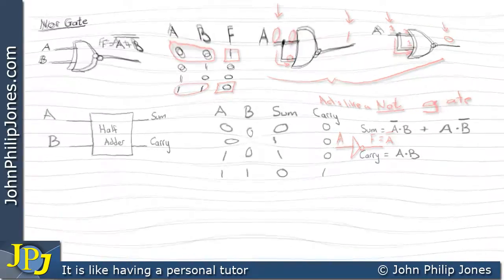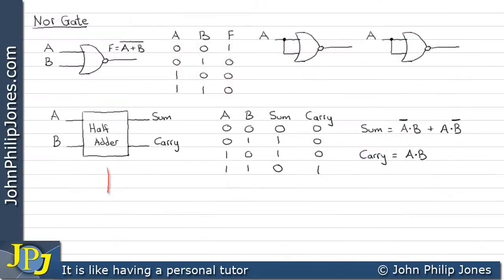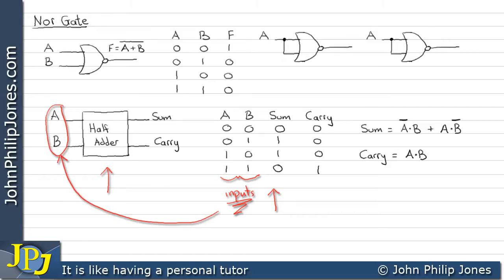So coupling the inputs to a two-input NOR gate gives us the same functionality as a NOT gate. Here we can see the schematic diagram for a half adder, and over here we have a truth table. These are the inputs to the half adder — A and B.